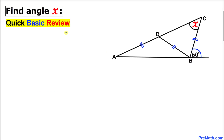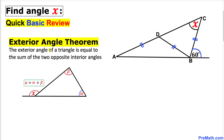Before we proceed, let me go over a basic review. Let's recall the exterior angle theorem: the exterior angle of a triangle is equal to the sum of the two opposite interior angles. As you can see in this diagram, angle X is our exterior angle, and it equals the sum of the two opposite interior angles alpha and beta. So X equals alpha plus beta.